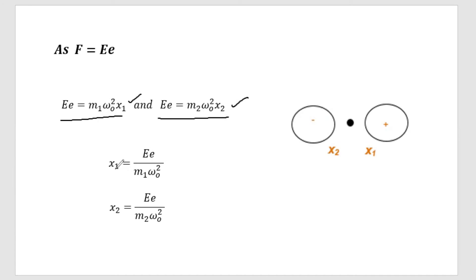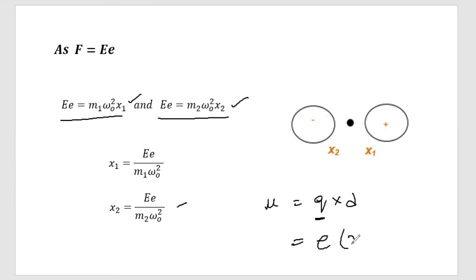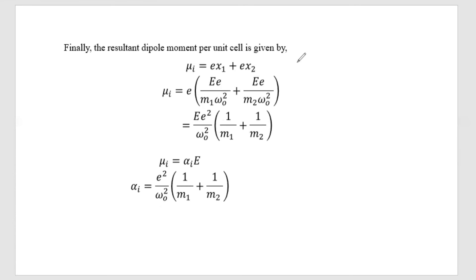From these equations, X1 equals e·E divided by M1·omega-naught², and X2 equals e·E divided by M2·omega-naught². Substituting into the dipole moment formula — dipole moment equals charge times distance, where the charge is one unit charge e and the distance is X1 plus X2 — the ionic dipole moment mu_i equals e times (e·E/M1·omega-naught² + e·E/M2·omega-naught²).